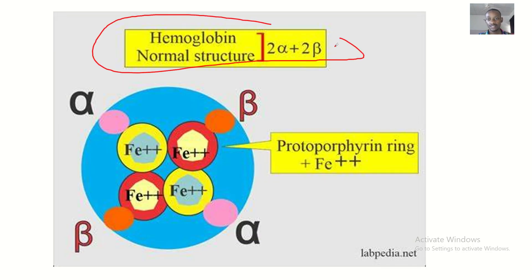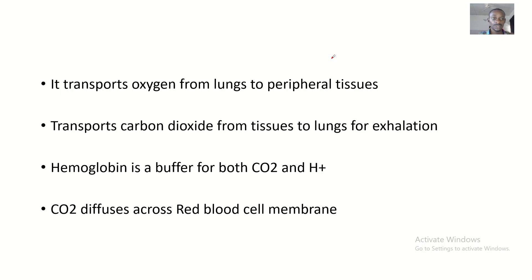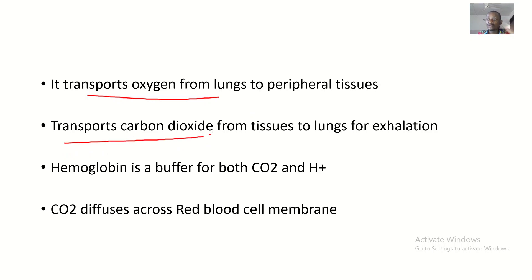This is your hemoglobin, having two alpha and two beta chains. The hemoglobin buffering system transports oxygen from the lungs to peripheral tissues, and transports carbon dioxide from the peripheral tissues to the lungs to be exhaled. Hemoglobin is a buffer for both carbon dioxide and hydrogen.